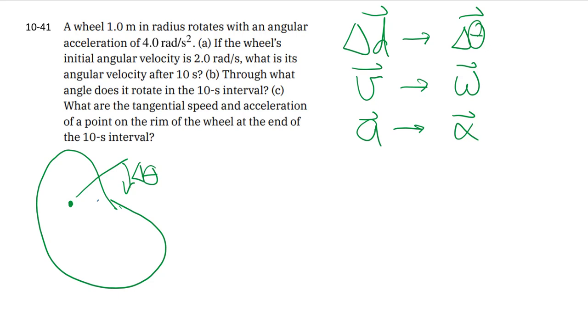So here, we have a case where we have a wheel with a certain radius that rotates with an angular acceleration. The most important thing they're telling us is that this angular acceleration is constant. So given constant angular acceleration, we can use our kinematics equations. In part A, we're asked to look for the angular velocity after some time.